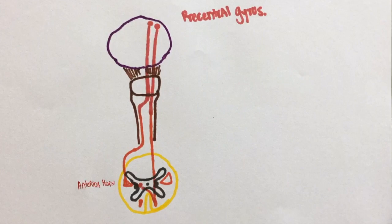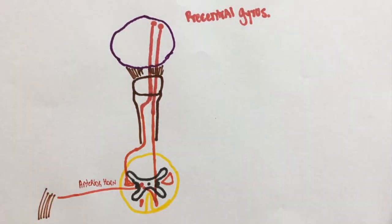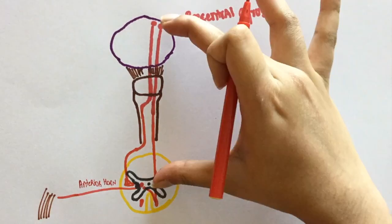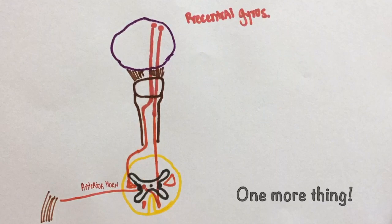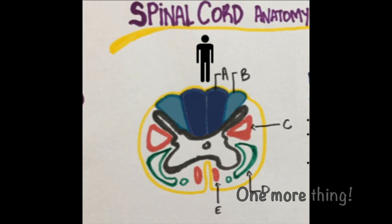From the anterior horn, nerve fibers get to the muscles of the limbs and the muscles of the trunk. All the neurons from the brain to the anterior horn are upper motor neurons. The ones from the anterior horn to the muscles are the lower motor neurons. Remember the picture of our little man standing on the ground? This applies only to the dorsal column. The spinothalamic tract and the corticospinal tract have their cervical fibers medially while the sacral fibers are lateral.